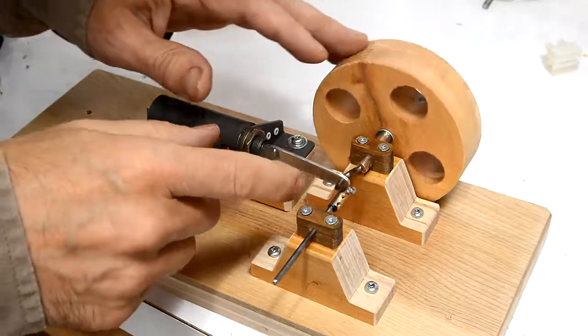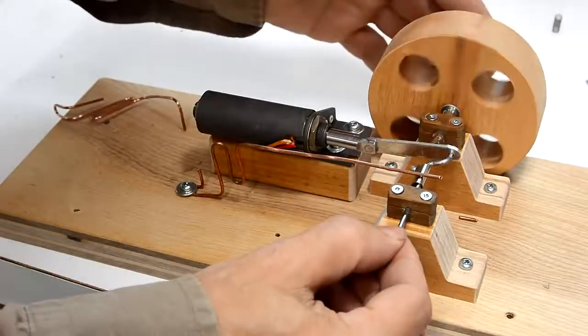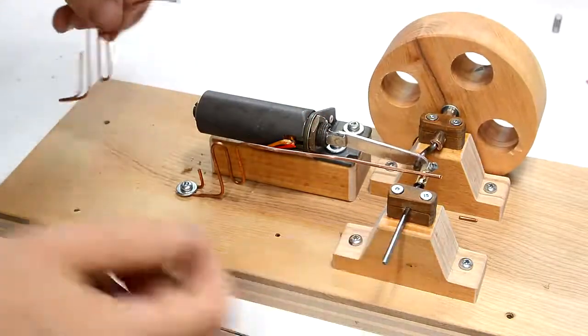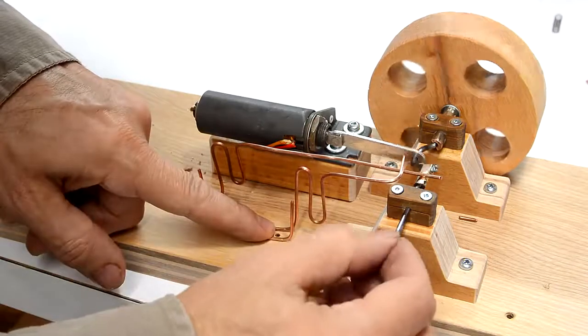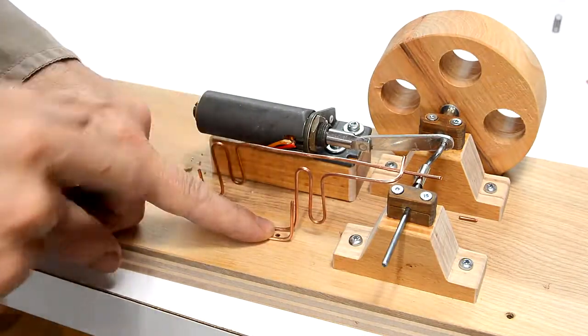Now I just need some electrical contacts to activate off the cam here. This copper wire rides on the cam and moves up and down. Then this one will contact the other wire when it's in the upper position to close the circuit and activate the solenoid.